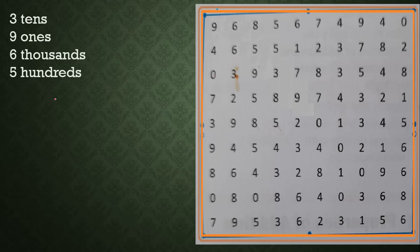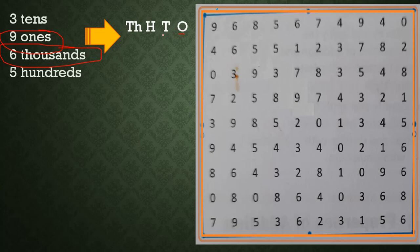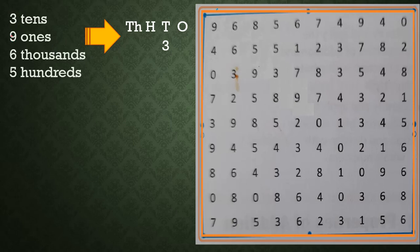I will write all the given place values starting from the lowest place to the highest place. The lowest place name is ones and the highest is thousands. So I write the place names as O for ones, T for tens, H for hundreds, and Th for thousands. Now forming the number: three tens — write 3 in the tens place; nine ones — write 9 in the ones place; six thousands — write 6 in the thousands place; five hundreds — write 5 in the hundreds place.